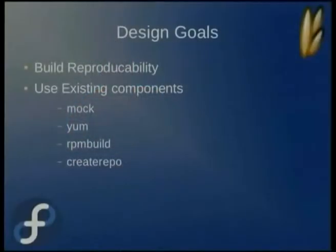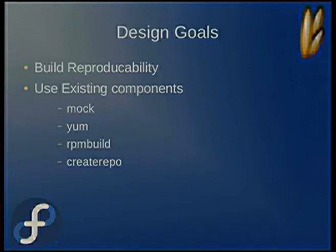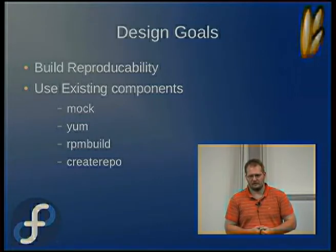The design goals with Koji: the main one was build reproducibility. If we built software today and six months from now we're trying to debug a problem with it, we want to know exactly how we built it and what we built it against, so that you can reproduce that environment to work out and debug the issue. It also heavily uses existing components.